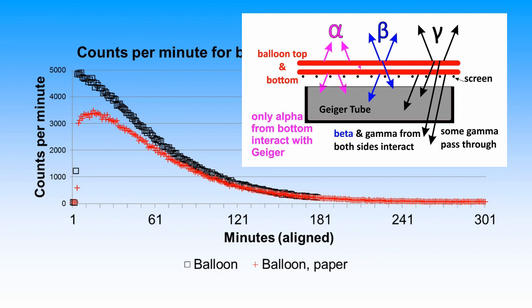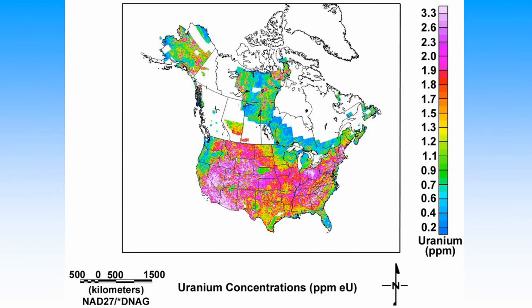This figure shows estimates of the uranium concentration at the surface of the earth for much of North America. The uranium concentration data was estimated using airborne gamma spectra surveys to infer the concentration of members of the decay series. Presently, it no longer exists on the internet in this form.